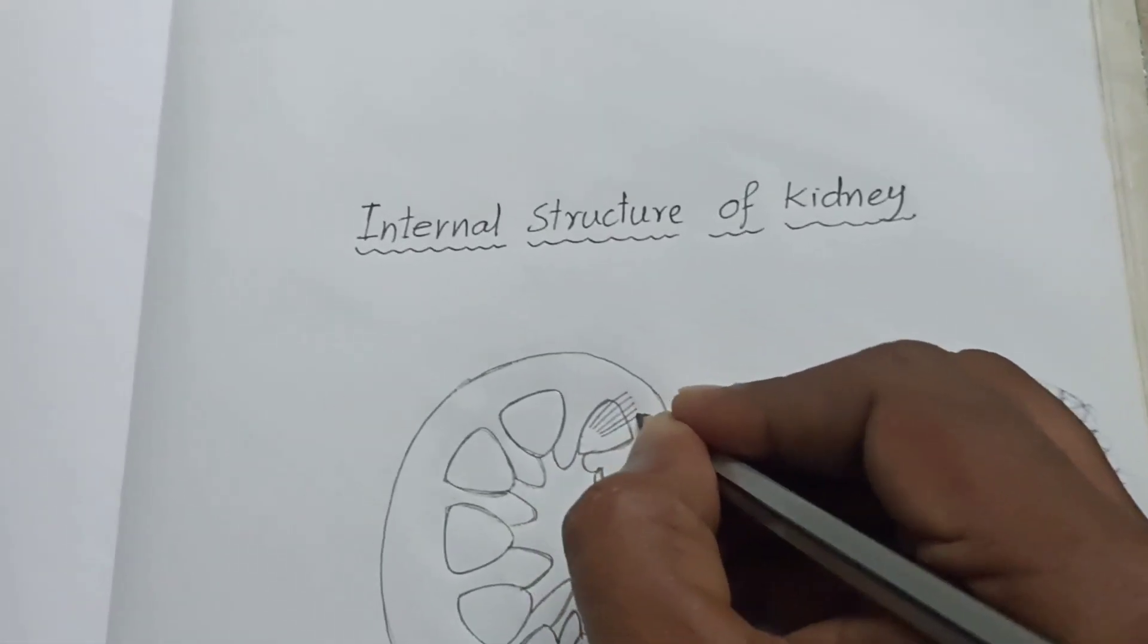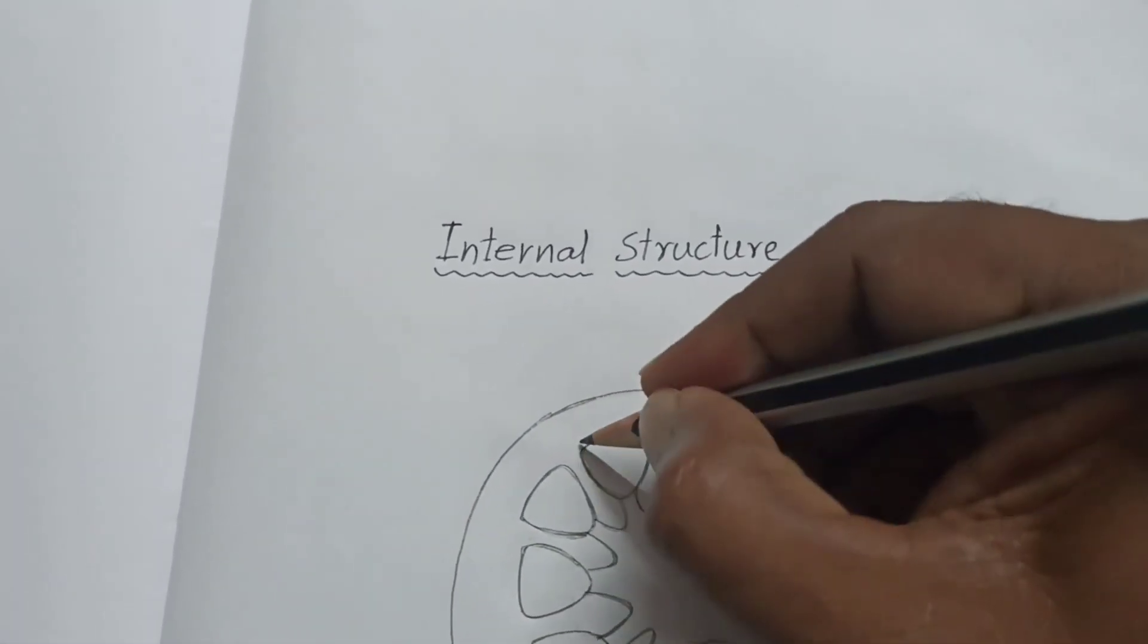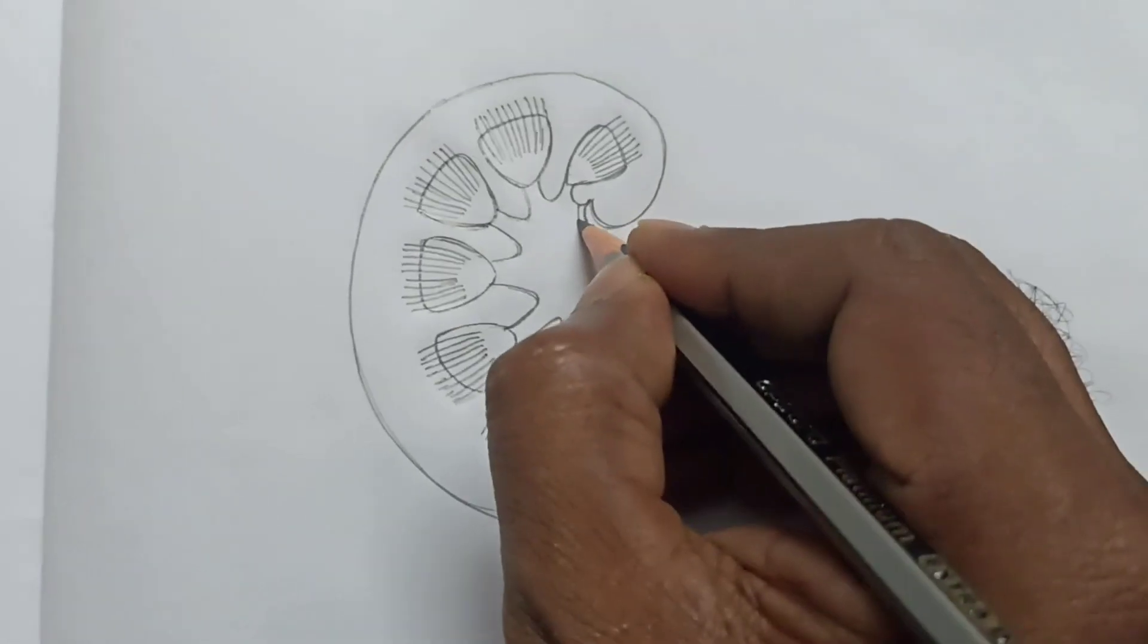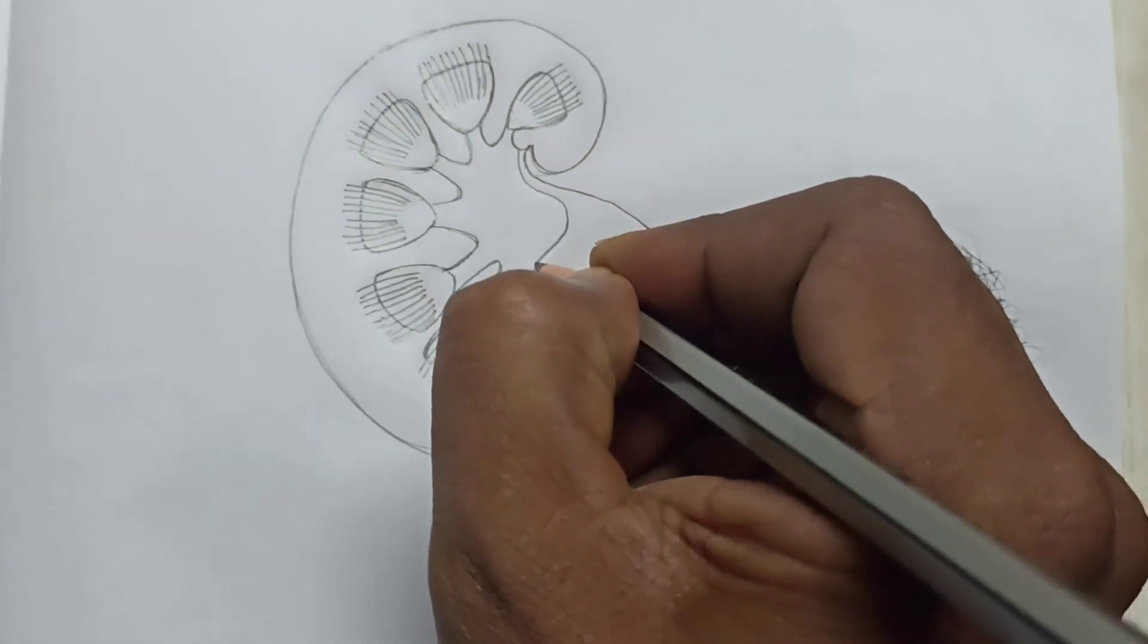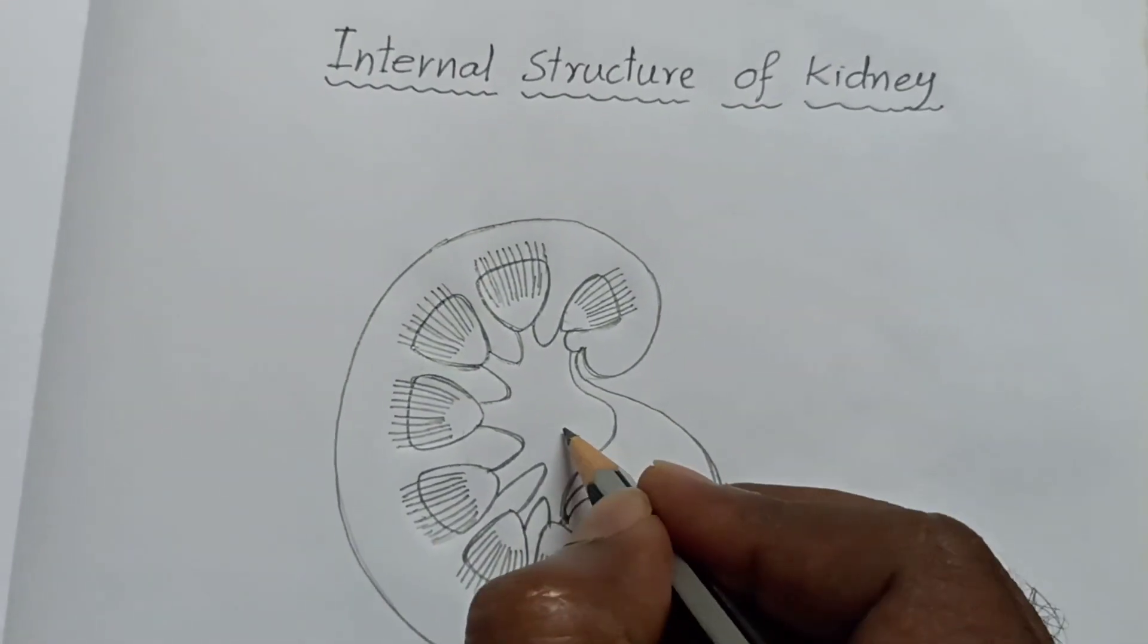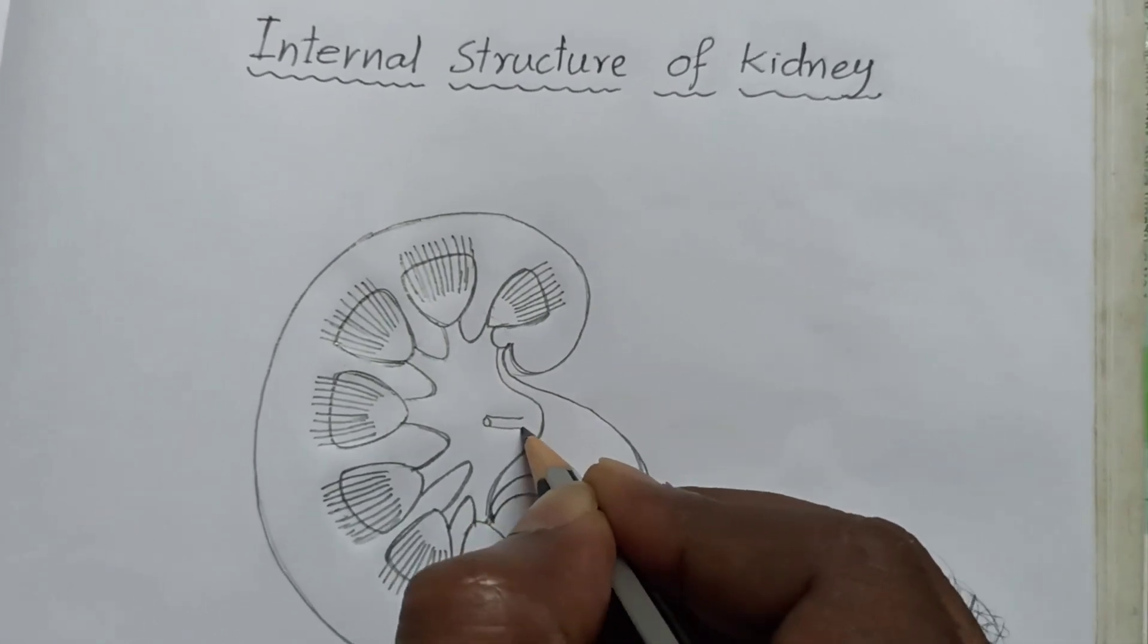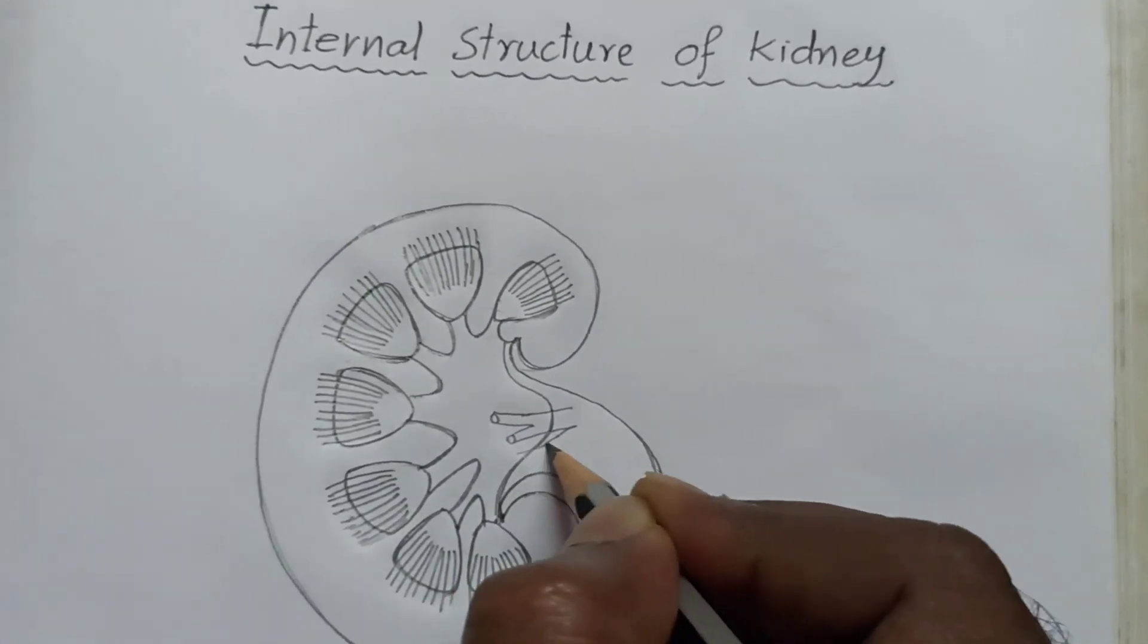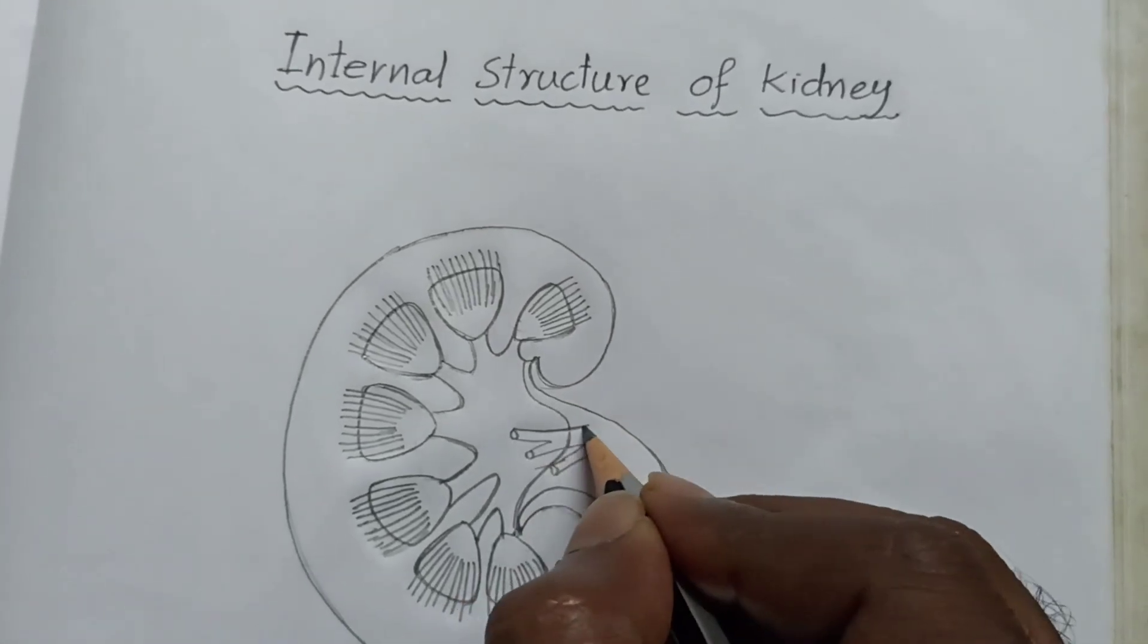The collecting ducts are known as nephrons. You have to draw like this. This is pelvis, the pelvis region. Now I am drawing renal artery. This is the renal artery.